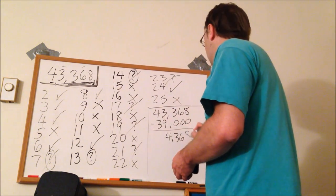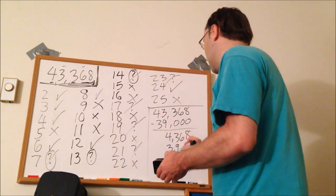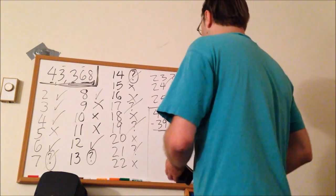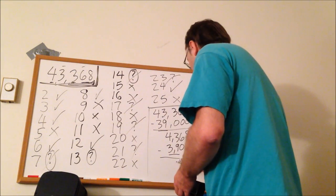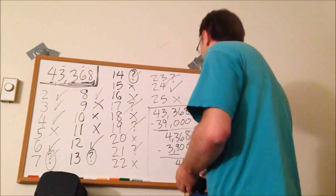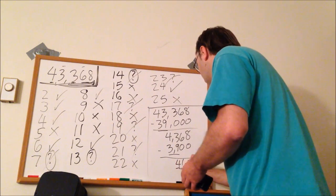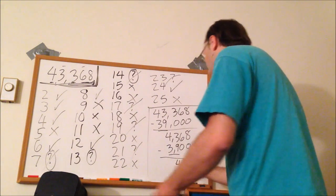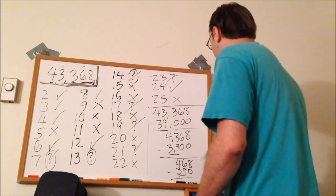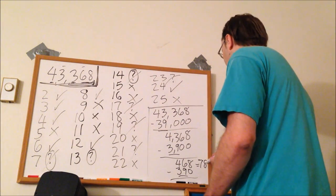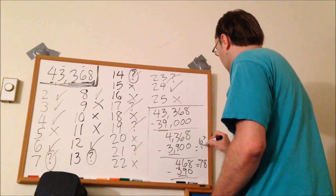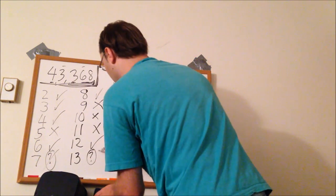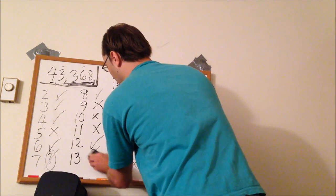So we get 4,368. And again, let's subtract 3,900 now. Because 13 times 3 is 39. So you subtract this and you get 468. And if you subtract 390, using the same concept here, that 13 times 3 is 39. And that difference right here is 78, which is 6 times 13. And because 6 is an integer, therefore, it is divisible by 13.